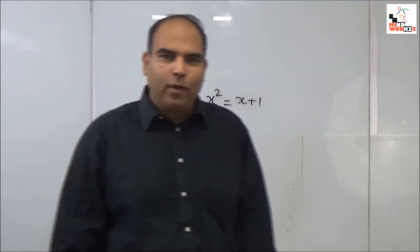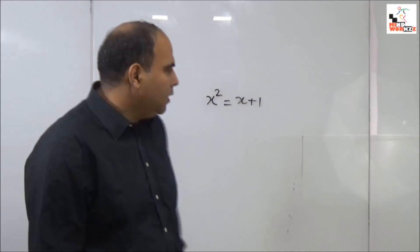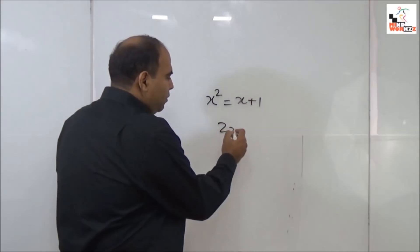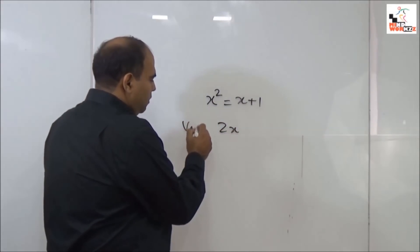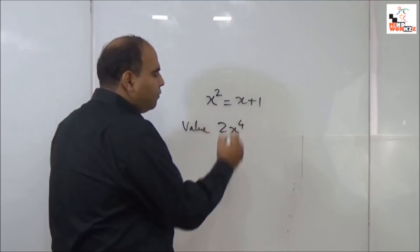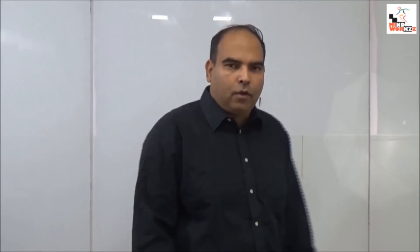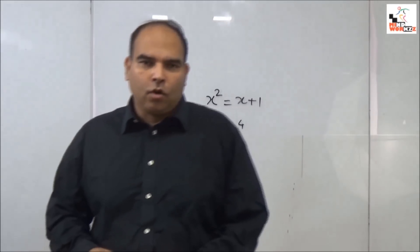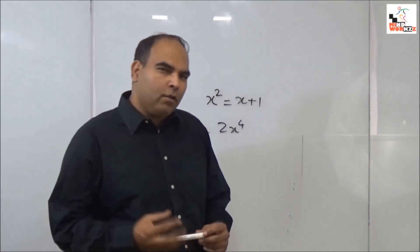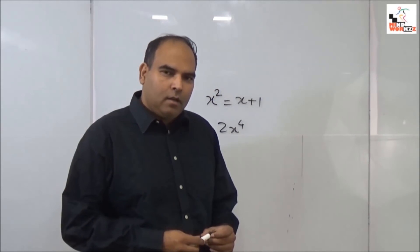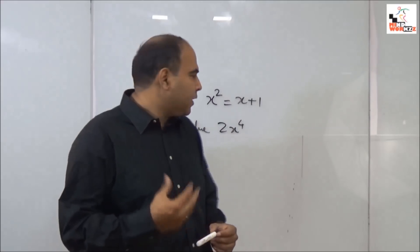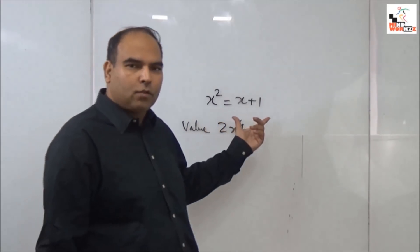This is the question I faced. The question asked in CAT 17 was: given that x² = x + 1, find the value of 2x⁴. As you can recognize this is a normal quadratic equation, but there are a couple of problems if you try to solve it mathematically.